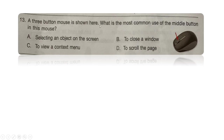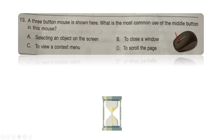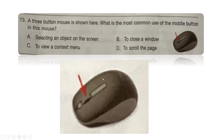Next question: a 3-button mouse is shown. What is the most common use of the middle button? Option A: selecting an object on the screen. Option B: to close a window. Option C: to view a context menu. Option D: to scroll the page. The right answer is option D — the center scroll wheel is used to scroll a page.